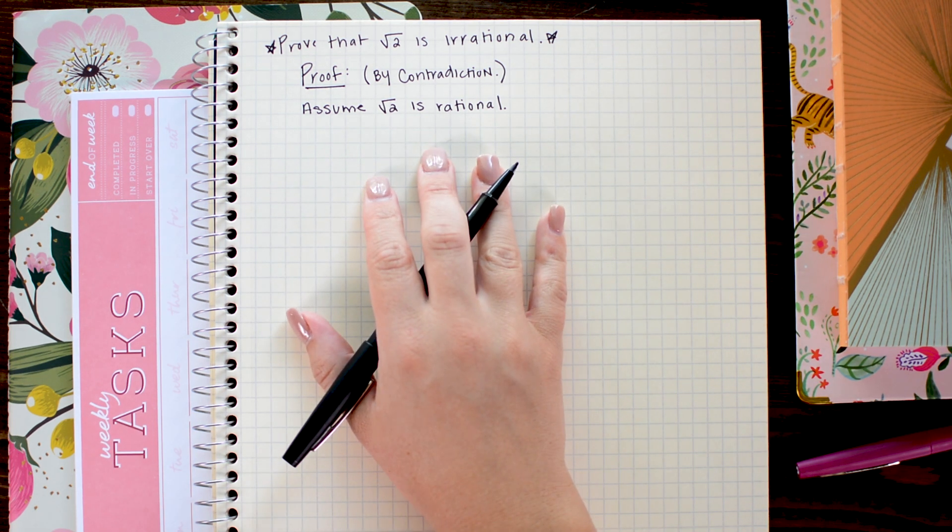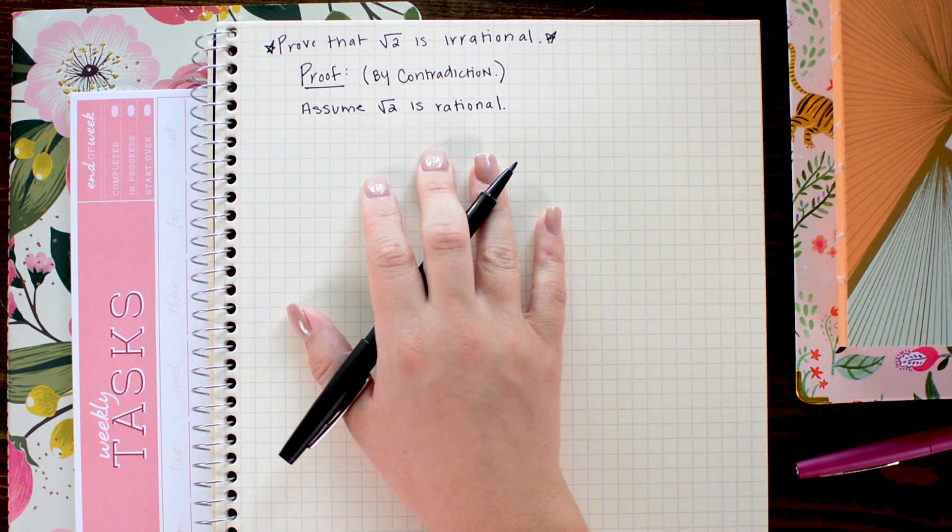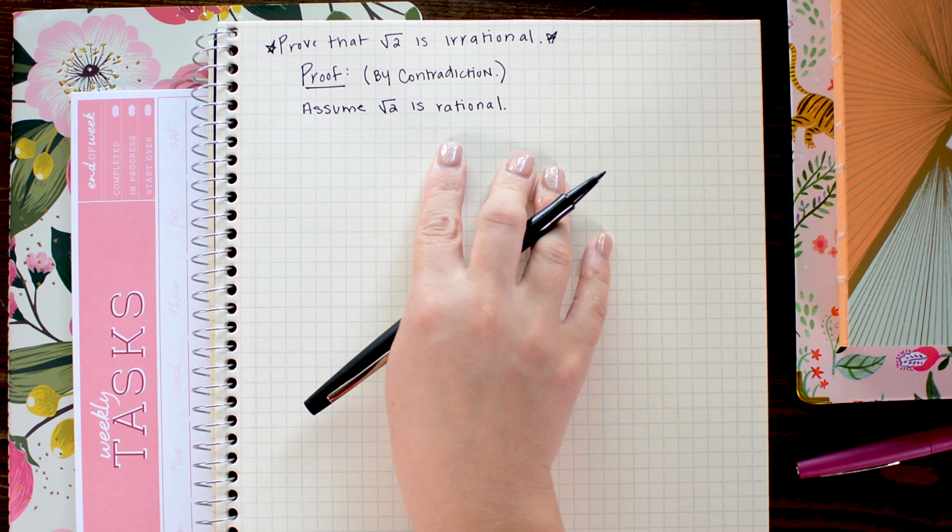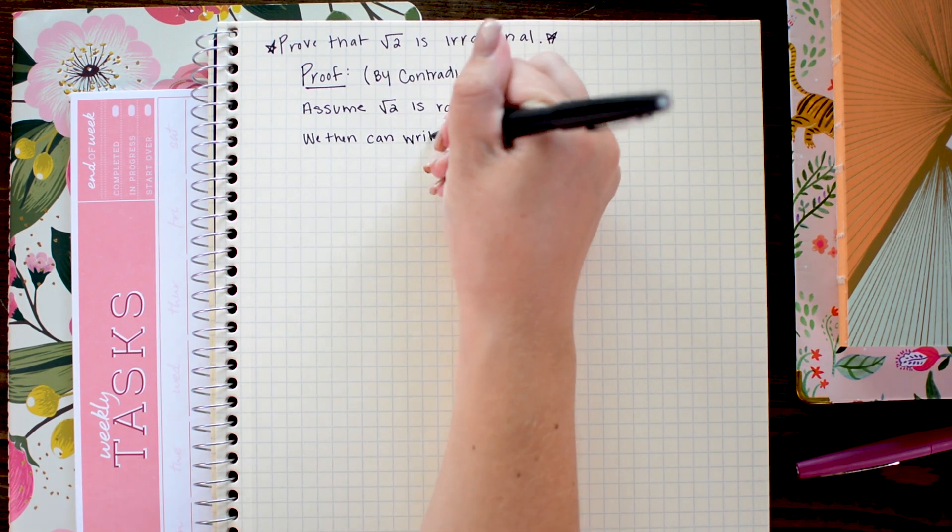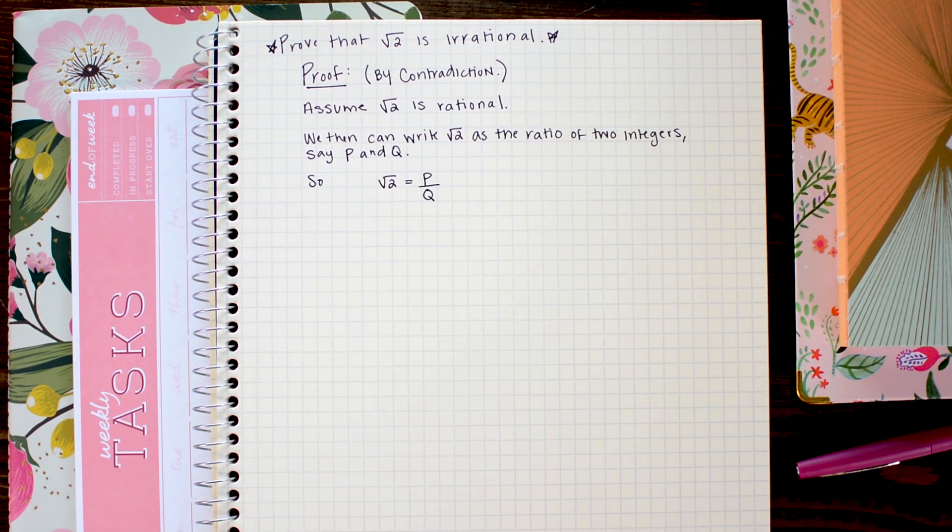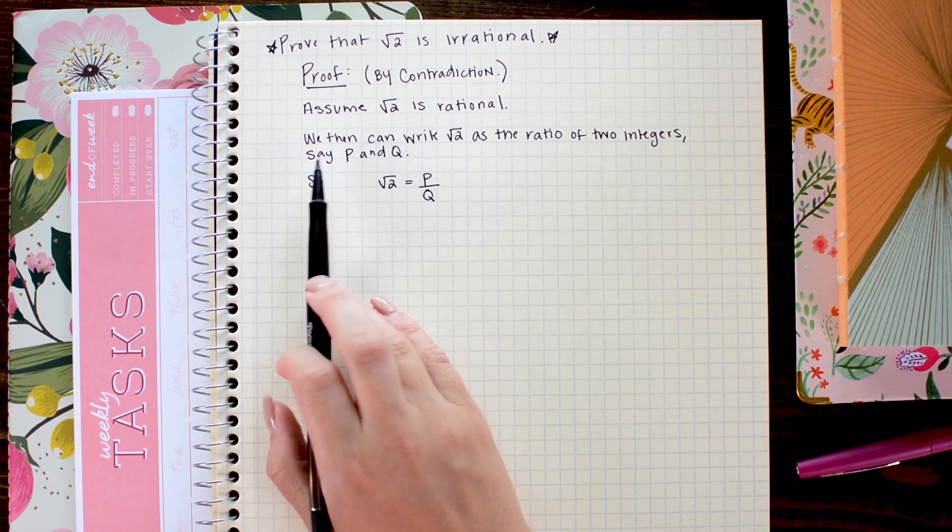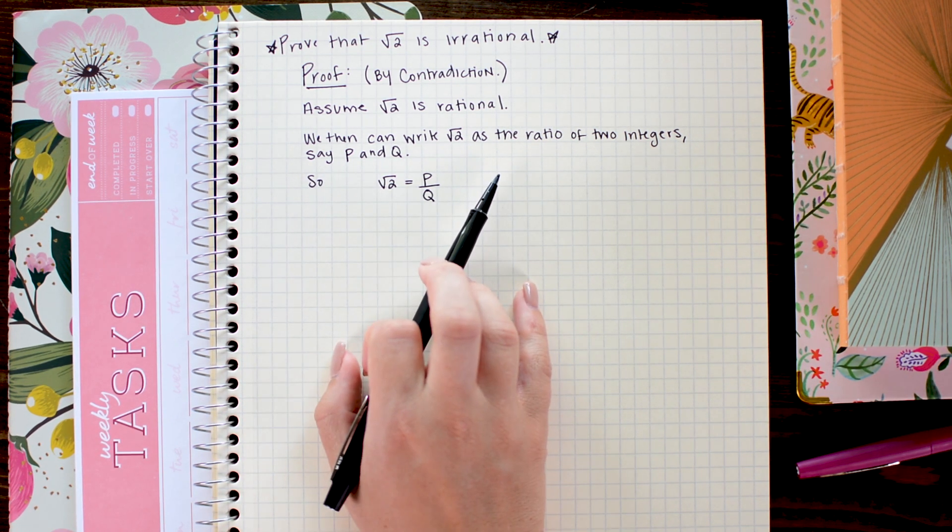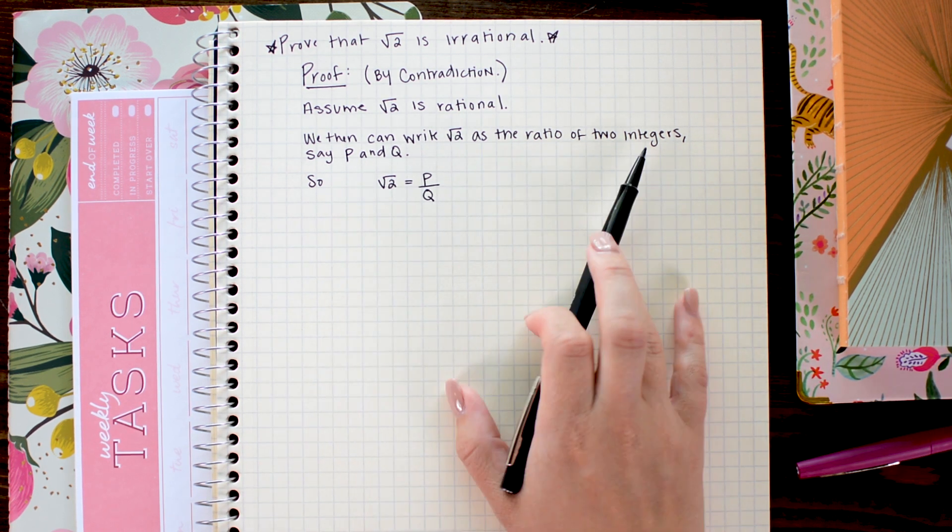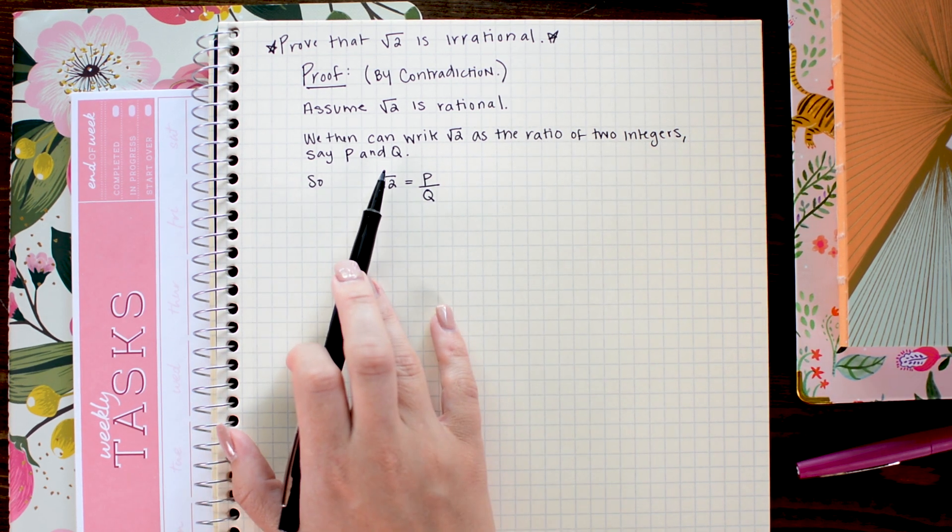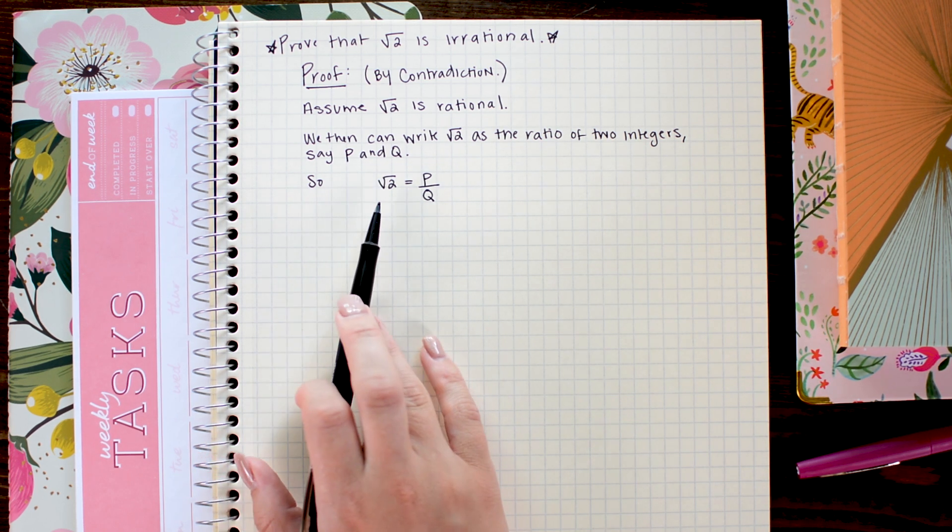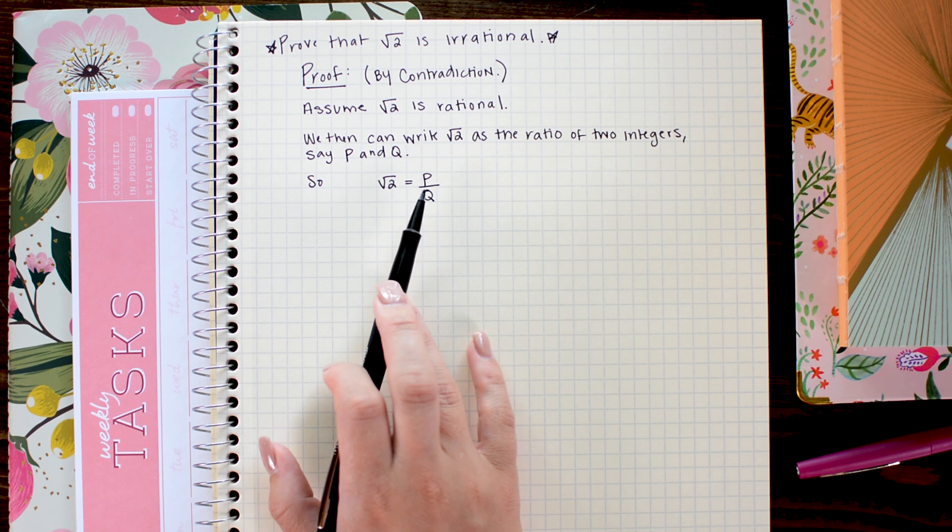Now we want to use a series of logical steps to create a self-contradiction. So at this point, I ask myself, what does being rational mean? Since we're doing a proof, it is important that we use real words to actually describe what we're doing here. So I just went ahead and wrote that we then can write square root of 2 as the ratio of two integers, say p and q. So p and q are just the variables I chose. And then I say that means the square root of 2 is equal to p over q.